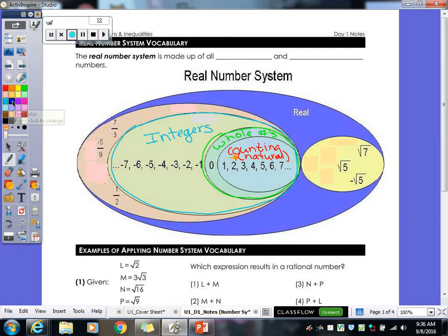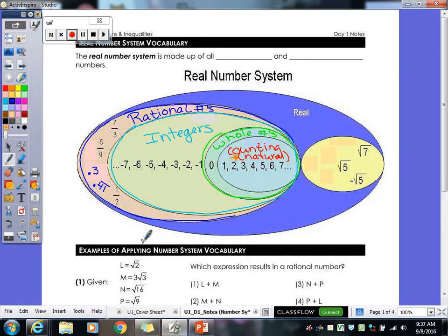So then our next circle here, that one then includes some fractions. We got seven thirds, negative five ninths, one half. So once we start adding those fractions, we can even add terminating decimals in there. So if we had like point three, that would go in this category. Repeating decimals. So if I had point four one repeating, that would also go in this category. We call these our rational numbers. We deal a lot with our rational numbers. For the most part, those are the ones that we do use.